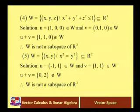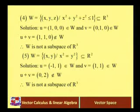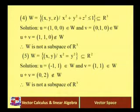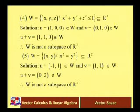The fourth example: W equals {(x, y, z) such that x² + y² + z² ≤ 1}. That means the sum of the squares of all coordinates should be less than or equal to 1. Only those types of elements are in the set. Clearly this is a subset of R³, so we take V equal to R³.